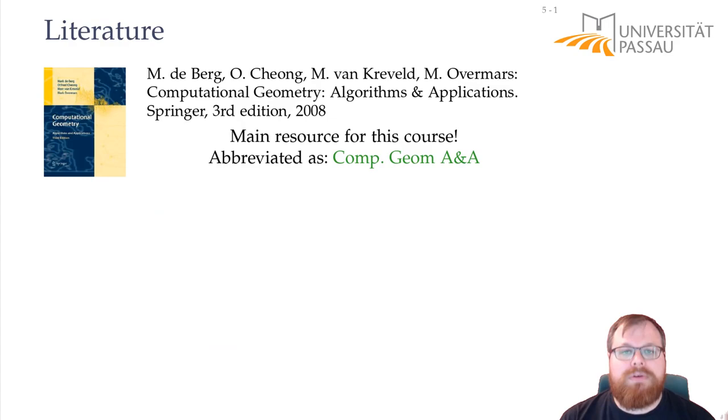We have in total three textbooks but the first one is the most important. This is the main resource for this course. This is a book by Mark de Berg, Alfred Chong, Mark van Greveld and Mark Overmaas. Some people also call it the three mark book and all the stuff that we learn about in the lecture is in this book here. It's like a better script. There are very nice explanations, there are different figures than I use and whenever you don't understand something this should be the first book that you look into.